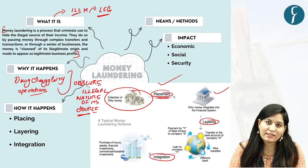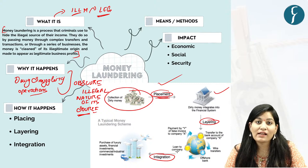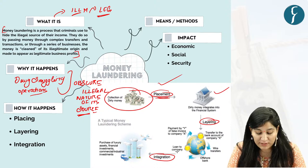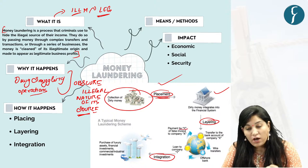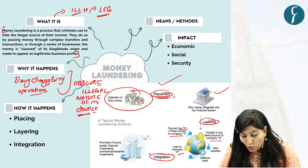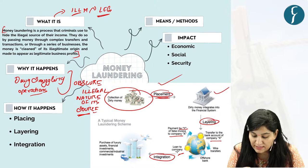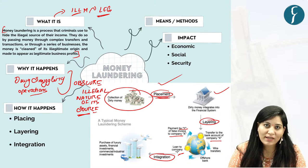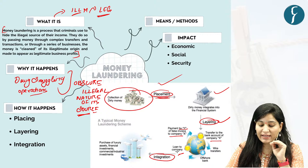Now that money is in the system, the next task is to obscure the illegal nature of its source — that is layering. This is done by involving complex transactions, by creating shell companies, by moving funds between different accounts. For example, payment by false invoice to a company, then transfer to a bank account, then a loan to another company — wrapping different complex transactions to make it virtually impossible to trace back the illegal origin.